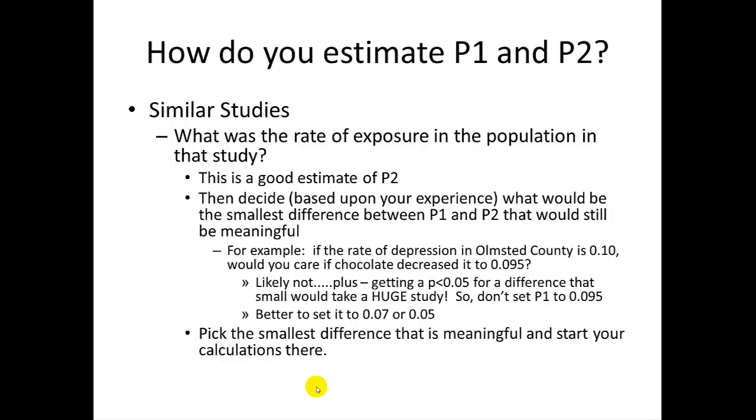One possible way to estimate these numbers is to look in the scientific literature for studies that are similar to yours. Can you find a study that estimates the proportion of the unexposed population that has the outcome? If so, this is a good estimate of P2 for your study. Sometimes, however, all you can find is the proportion of the entire population that has the outcome. This is a good range to start with your estimates in the unexposed population, recognizing, of course, that it's a mixture of both exposed and unexposed. Therefore, you need to consider how you should modify it, either up or down.